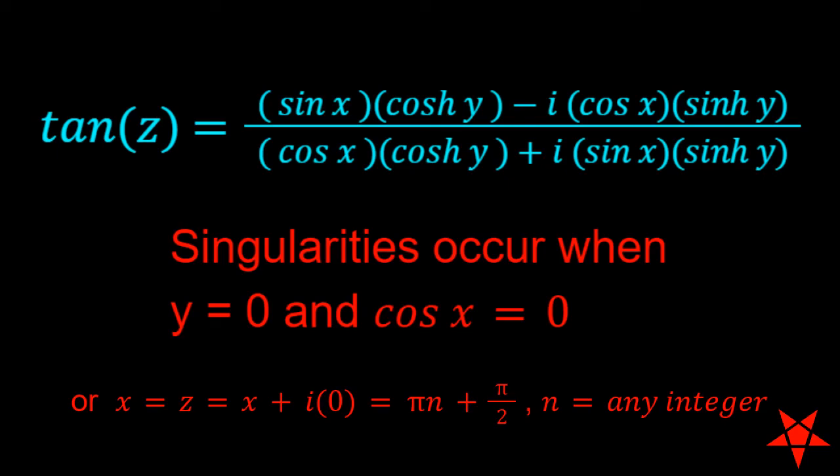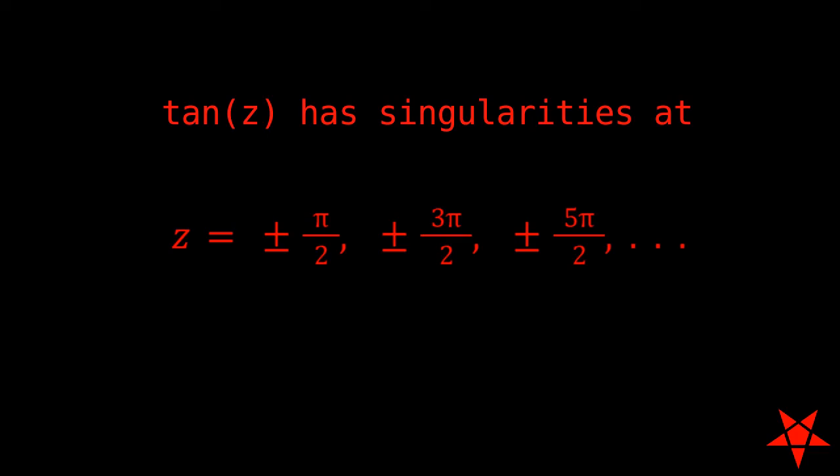Since the imaginary component of z is zero at these singular points, tangent of z has singularities at z equals ±π/2, ±3π/2, ±5π/2, and so on along the real axis in both directions.